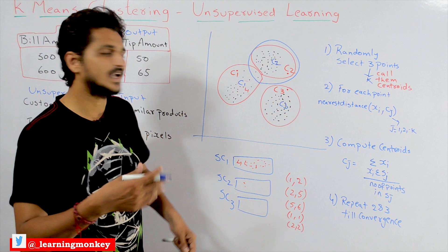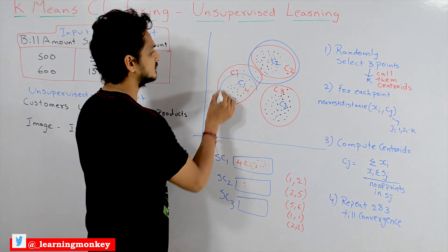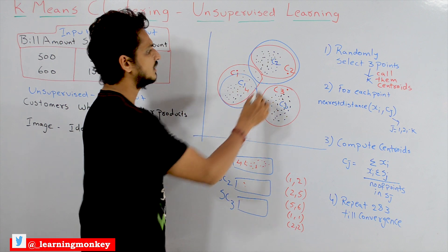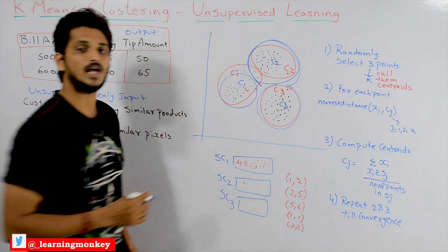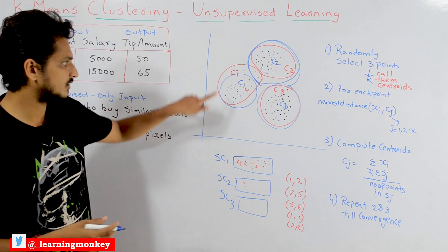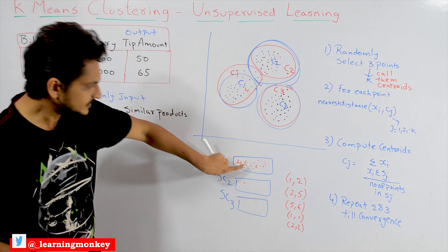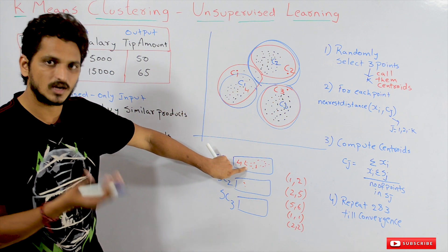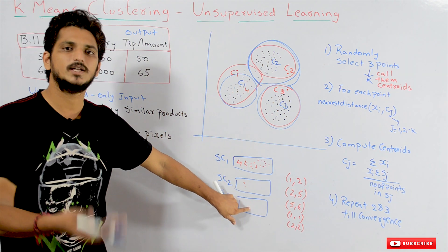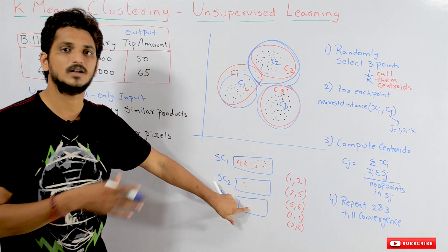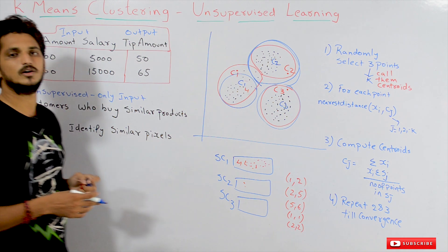At the end, we will get a final grouping where these points belong to C1, these points belong to C2, and these points belong to C3. That is how we identify the cluster values and their centroids. This set of points is one cluster, this set is another cluster, and the third set is the third cluster. This is how K-means clustering works.